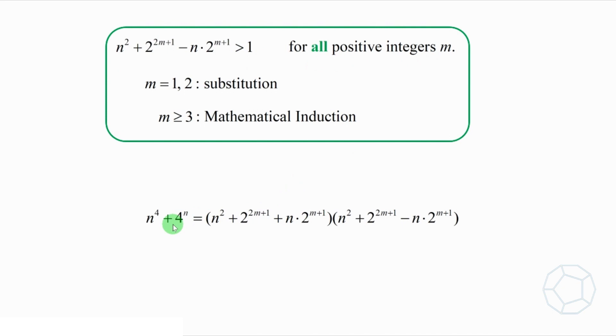Go back to the very beginning. We can say that n to the power of 4 plus 4 to the power of n can be written as a product of 2 integers. Both of them are larger than 1. It is always a composite number. And this is true for all odd positive integers n, where n is larger than 1.